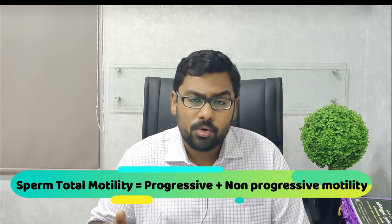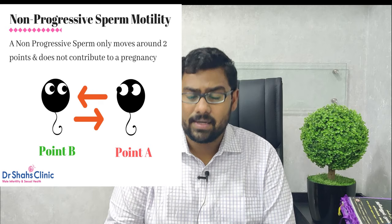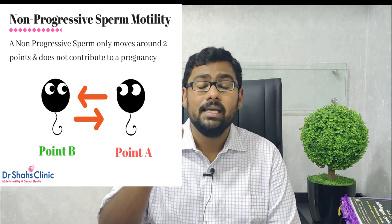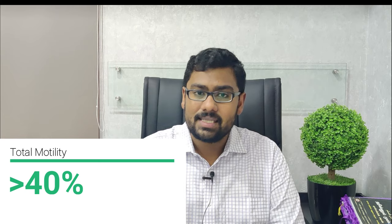Sperm total motility in a semen analysis report is the sum of both progressively motile sperm and non-progressively motile sperm. A non-progressively motile sperm, as shown in the image on the right, is one that moves only in one spot — in circles or vibrating in the same place. The sum of both these values should be more than 40%. If total motility is more than 40%, the report is considered normal in terms of motility.